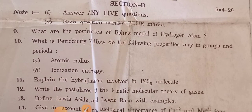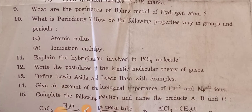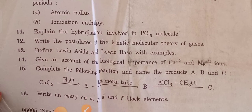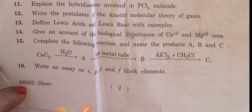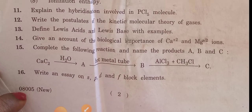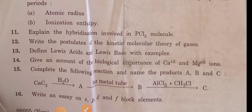Next is Section B questions. Each question carries four marks. What are the postulates of the Bohr model of the hydrogen atom? What is periodicity? How do the following properties vary in groups and periods: atomic radius and ionization energy? Explain the hybridization involved in PCl5 molecule. Write the postulates of the kinetic molecular theory of gases. Differentiate Lewis acids and Lewis bases with examples. Give an account of the biological importance of calcium. Complete the following reactions and name the products A, B, and C. Write about S, P, D, and F block elements.